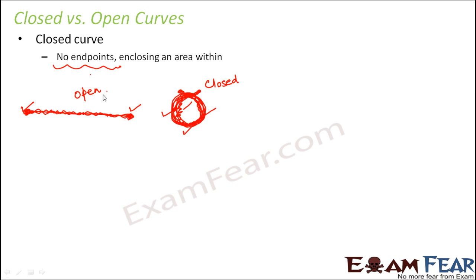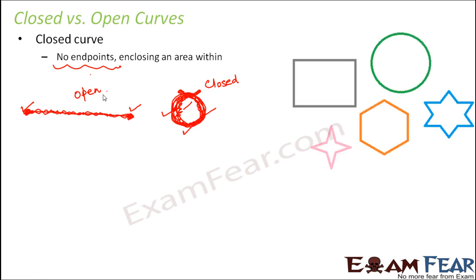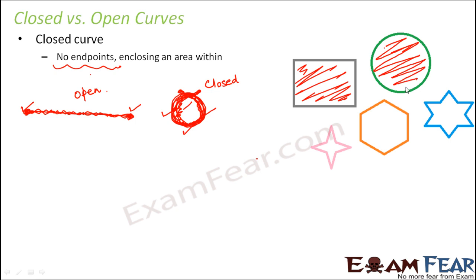So in an open curve, you will have distinctly a start point and an end point. But in a closed curve, there would be no distinct start point and end point, and it will enclose an area within it. Let us look at these images. Very clearly you can say that these are all examples of closed curves, because in all of them you see that they enclose some space within them. Look at this — it encloses this area within it. This curve encloses this area within. For each of these, can you tell me which would be the start point? It could be this point, or this point, or any point — we do not know which is the start point or the end point. So these are all examples of closed curves.